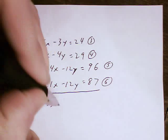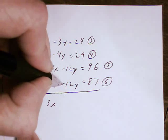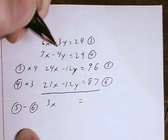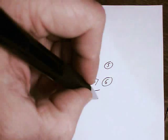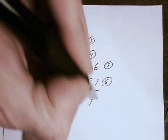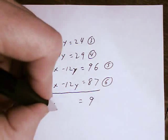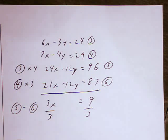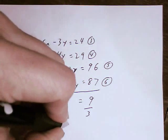That gives me 3x. Negative 12 minus negative 12 goes to 0. 96 minus 87 gives me 9. I divide both sides by 3. I'll get x equals 3.